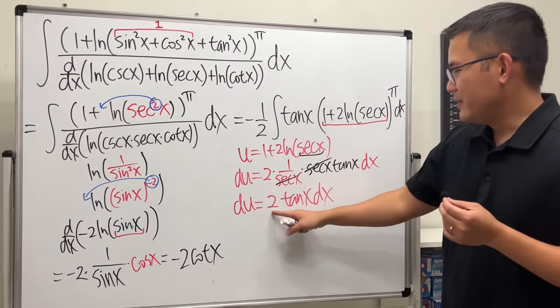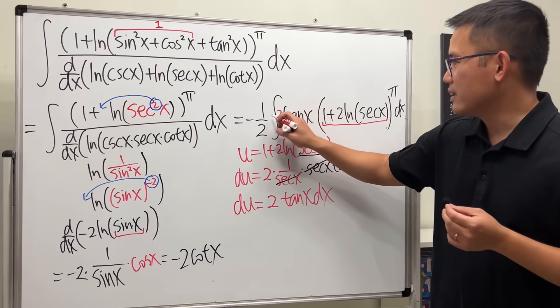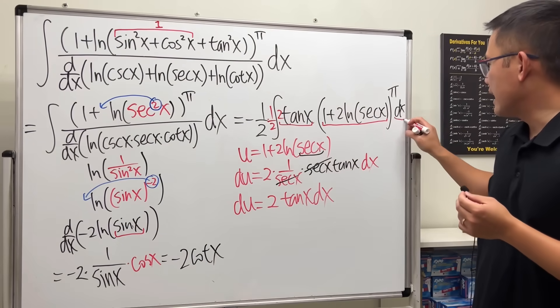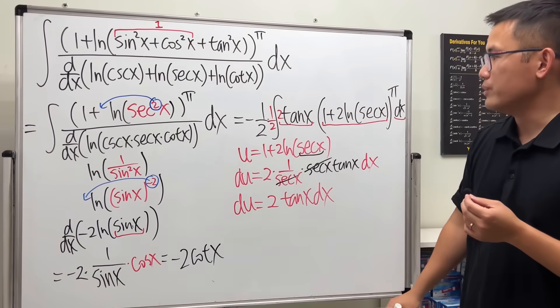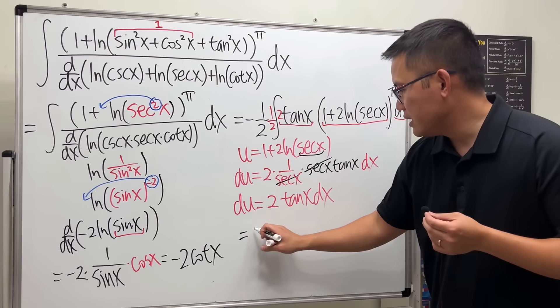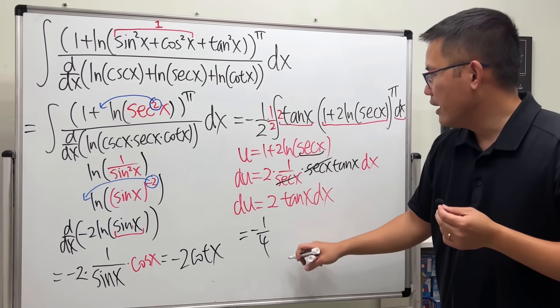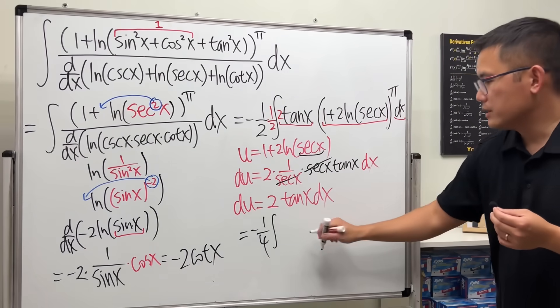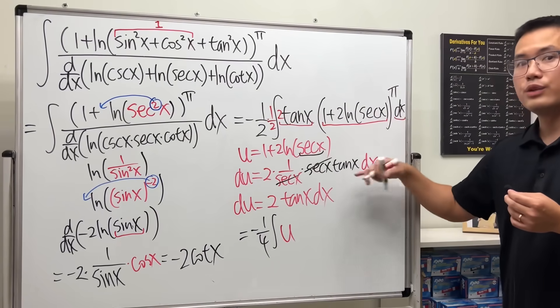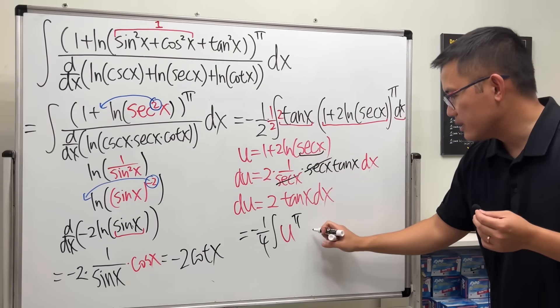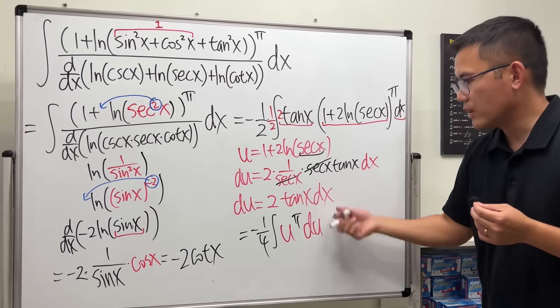All right, if you would like, you can put a 2 right here, and then again, divide it by 2. So, you can replace this right here, and that together with the du. So, all together, in the front, we have negative 1 over 4, and then we have the integral. So, this is just our u, yeah, to the pi's power, and then this, this, and that, all together is our du. Told you it's not so bad.